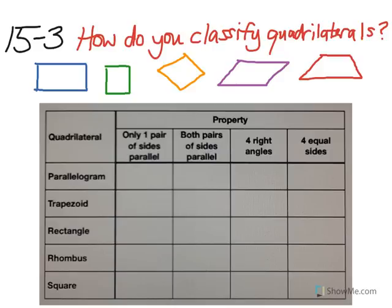Let's review what each quadrilateral is and let's see which boxes should be checked. First, a parallelogram has both pairs of opposite sides parallel and equal in length. So the opposite sides will be equal in length. In this case, only the second column, both pairs of sides parallel, should be checked.